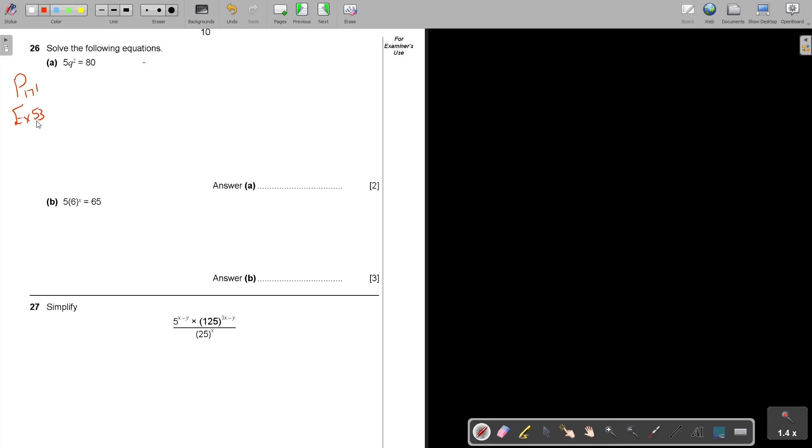So if I have 5Q² = 80, I just divide by 5 both sides and I get 16. But don't forget, if you take the square root, you must write plus minus. And then the answer will be ±4. So the value of Q will be ±4.